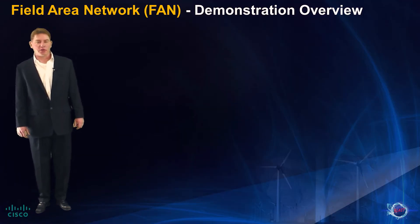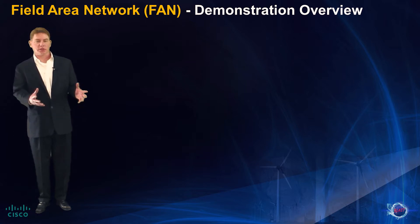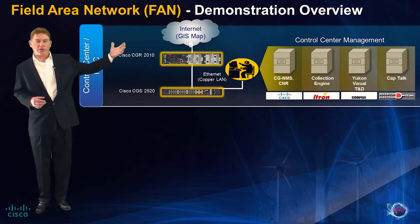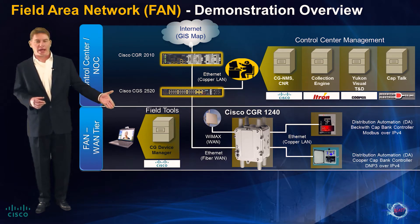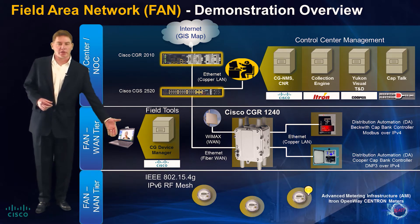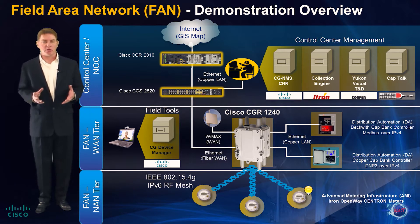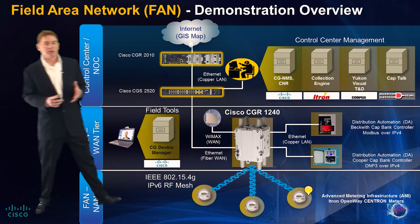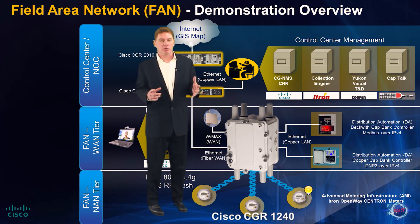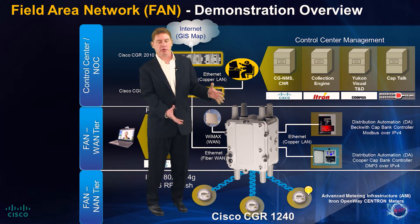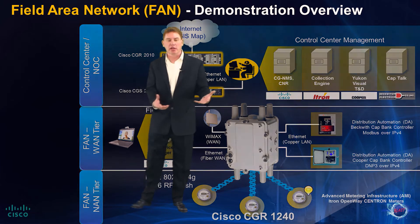Let's start by looking at an overview of the utility's multi-service communication network focusing on the field area network. The system is broken into three functional tiers: the control center NOC tier where utility applications are hosted; the wide area network tier that provides the backhaul of communications from the field to the control center; and finally the neighborhood area network tier where endpoints like smart meters are connected via radio frequency. At the center of the neighborhood area network and the wide area network tier is the Cisco Connected Grid Router 1240.